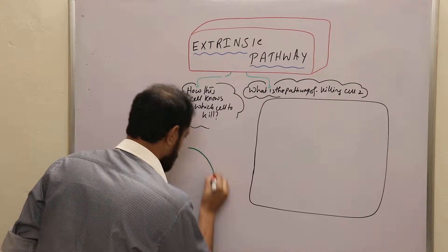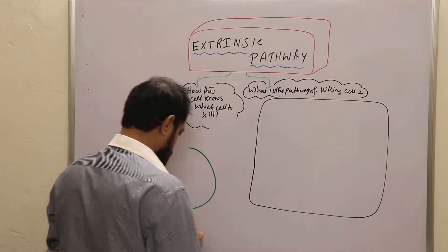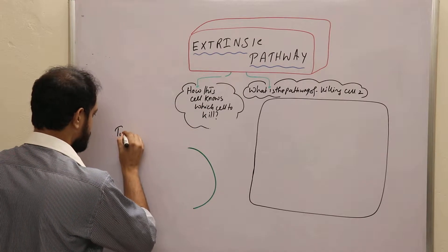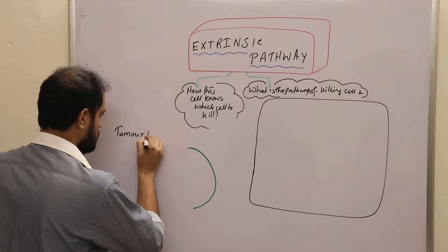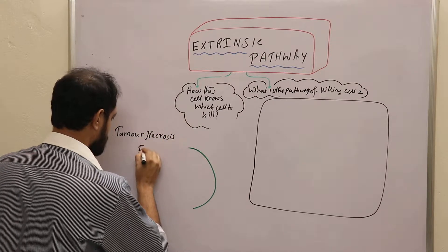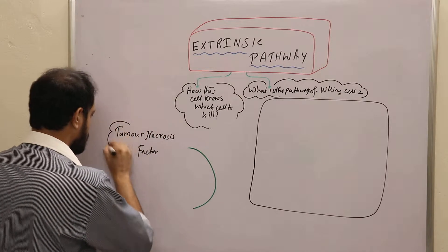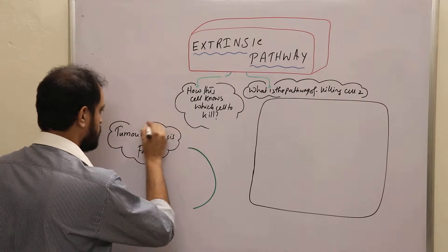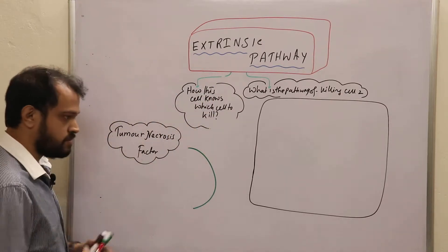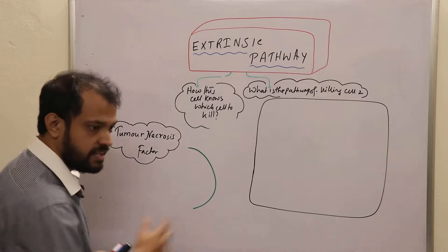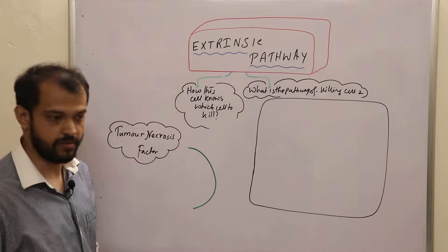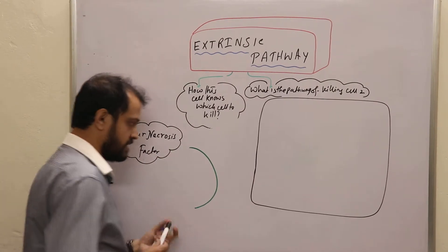Suppose this is cell number 2. You know something called tumor necrosis factor — TNF. Every cell in your body expresses a kind of tumor necrotic factor receptor, TNF receptor.